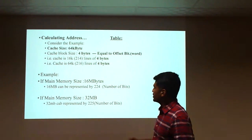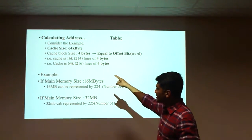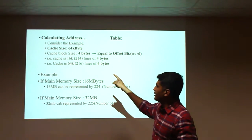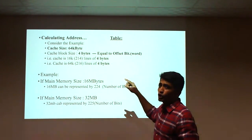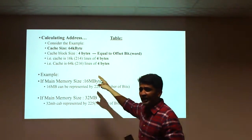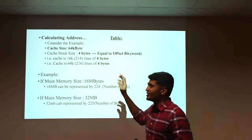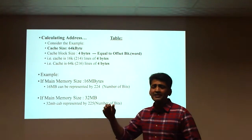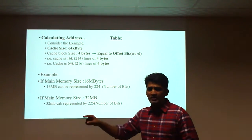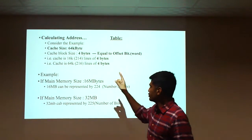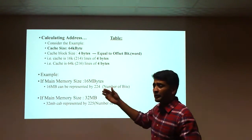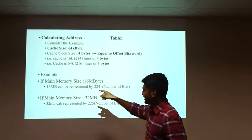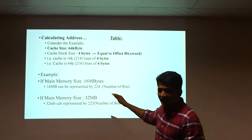For example, 16 KB can be represented as 2 to the power of 14, and 64 KB can be represented as 2 to the power of 16. So 16 KB requires 14 bits and 64 KB requires 16 bits to represent the number of address bits.